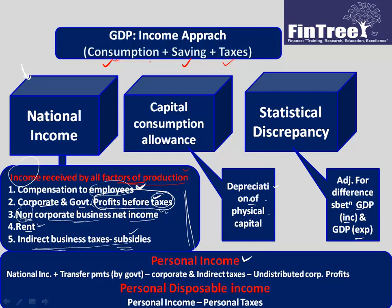When we calculate GDP, we do not deduct depreciation — that is why it is called gross domestic product. 'Gross' means depreciation is not reduced. Depreciation in economic language is called capital consumption allowance. Since the profits in our national income calculation have already had some depreciation deducted, we add back this number to get the gross figure, and also add back the statistical discrepancy so it reconciles with the expenditure approach.